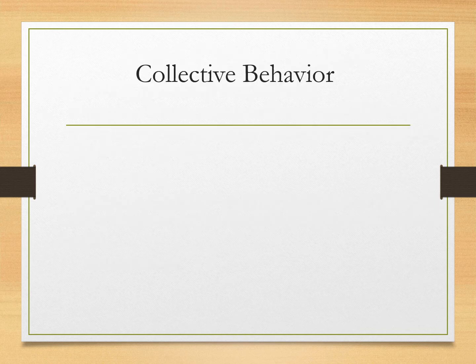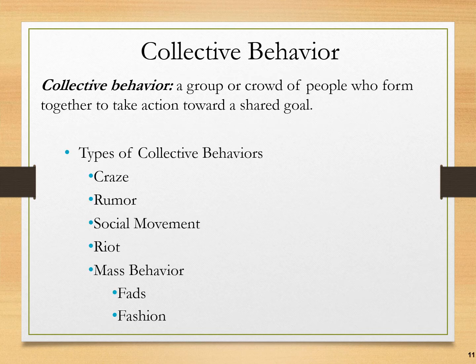Now let's talk about collective behavior. Pay attention to the difference between collective behavior and mass behavior, as that's where people sometimes get mixed up. Collective behavior occurs when a group or crowd of people form together to take action toward a shared goal. Types of collective behavior include a craze, a rumor, a social movement, a riot, and mass behavior — and mass behavior can be broken down into fads and fashions.